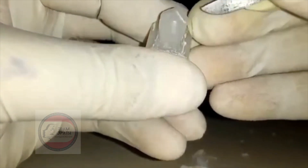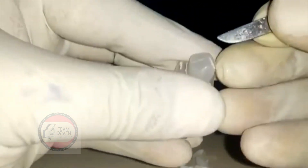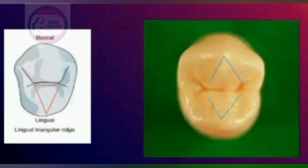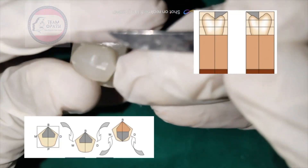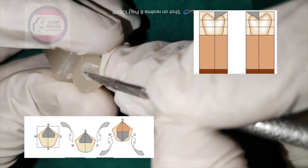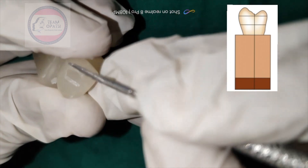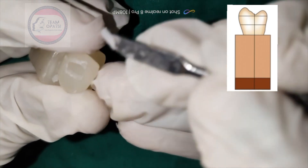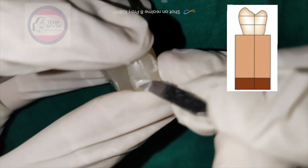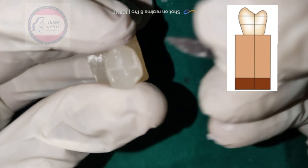The occlusal surface is divided by a central developmental groove. The buccal triangular ridge is formed by the mesial and distal cuspal inclines of the buccal cusp, extending from the cusp tip to the central groove. To make a buccal triangular ridge, remove wax on one side of the midline in an oblique direction from the cusp tip to the margin of the triangular fossa, then do the same on the other side.